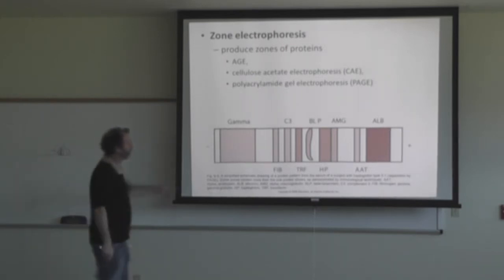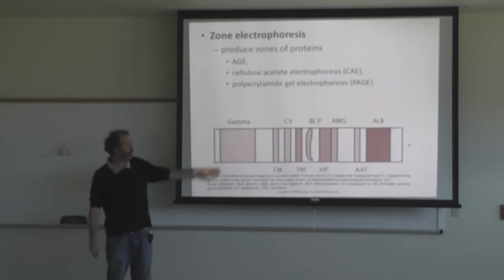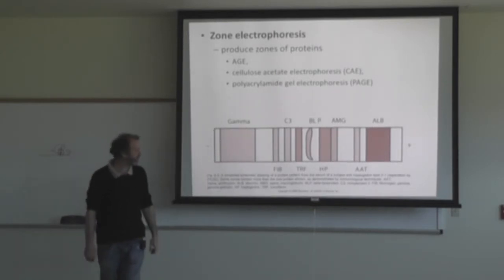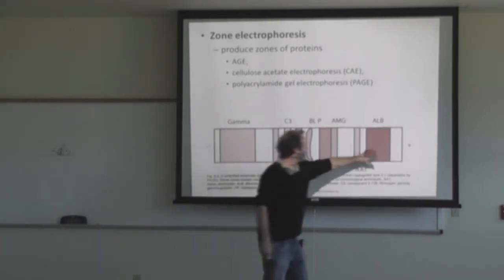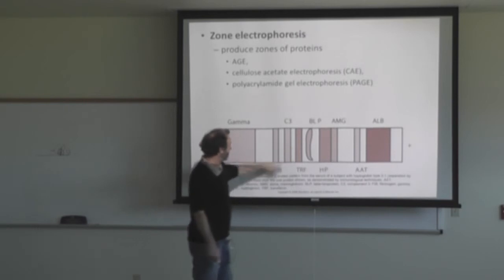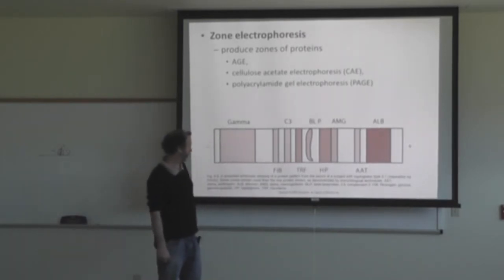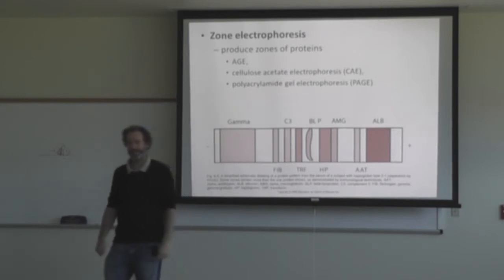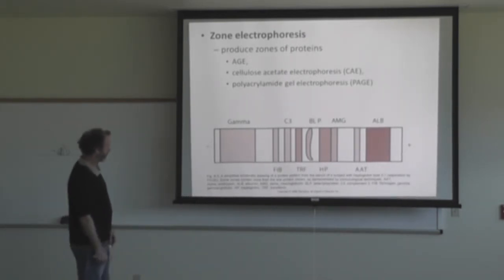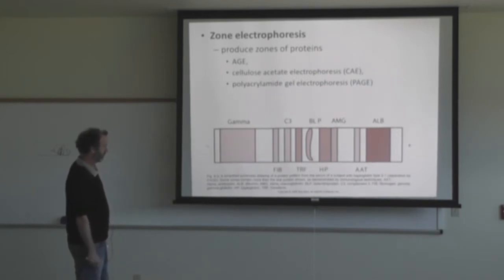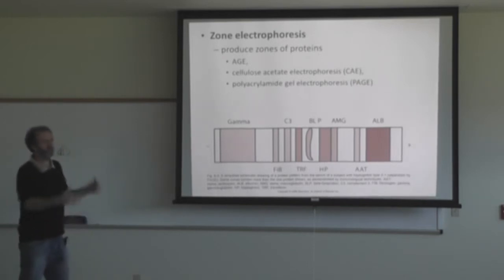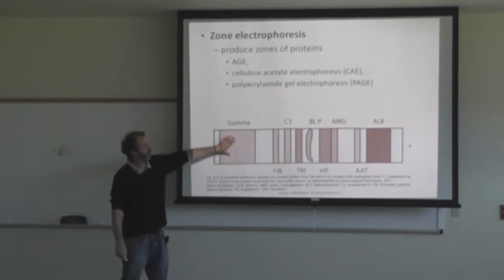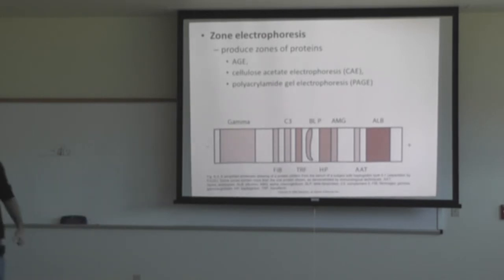Zone electrophoresis produces zones of proteins — this is what we did with the serum. We won't see as many fractions as in a high-resolution system. You have albumin, AAT, AMG, PLB, HP — all of these get separated. You shouldn't see fibrinogen in serum, only in plasma. These are natively folded proteins separated into zones — zonal electrophoresis. I'll show you how to analyze your gel in a minute.